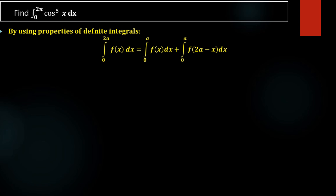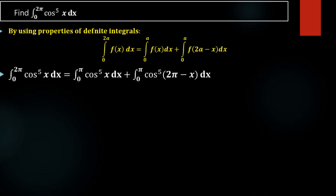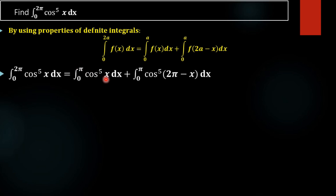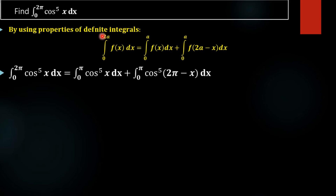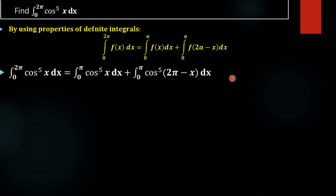By using that property, we can rewrite this integral as: integral 0 to 2π of cos⁵(x) dx equals integral 0 to π of cos⁵(x) dx plus integral 0 to π of f(2a − x), which is cos⁵(2π − x) dx, where the upper limit 2a here is 2π.